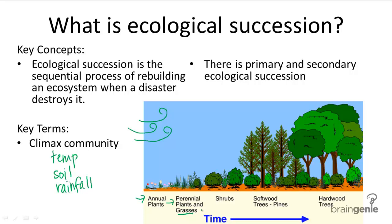The general timeframe for ecological succession from start to finish is approximately 1,000 years. And don't forget — ecological succession can also happen in aquatic environments.